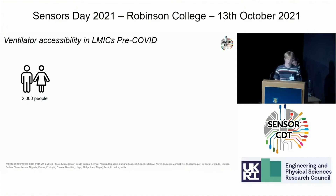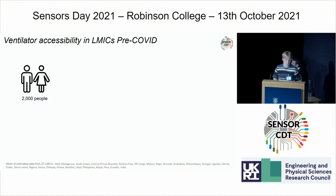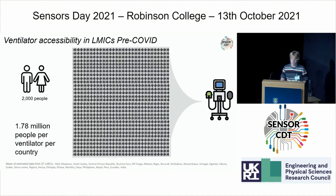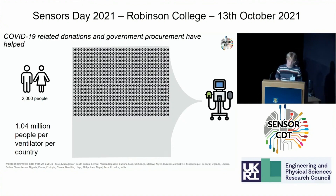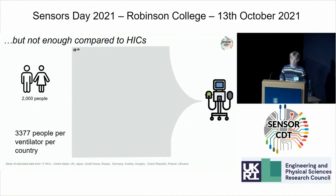As part of our literature review, we looked at ventilator accessibility in low- and middle-income countries. We pulled data from 27 LMICs and found 1.78 million people per ventilator per country pre-COVID. This improved somewhat with donations and government procurement during COVID, down to roughly 1.04 million people per ventilator per country. But comparing this to 11 high-income countries where there are only 3,377 people per ventilator, the difference is vast and clear.